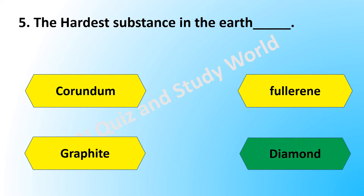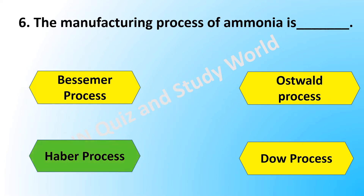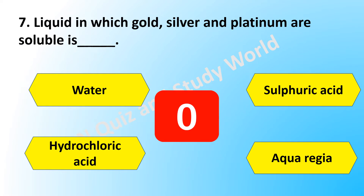The answer is diamond. The manufacturing process of ammonia is known as — is it the Bessemer process, Oswald process, Haber process, or Dow process? The answer is the Haber process. The liquid in which gold, silver, and platinum are soluble is — is it water, sulfuric acid, hydrochloric acid, or aqua regia?